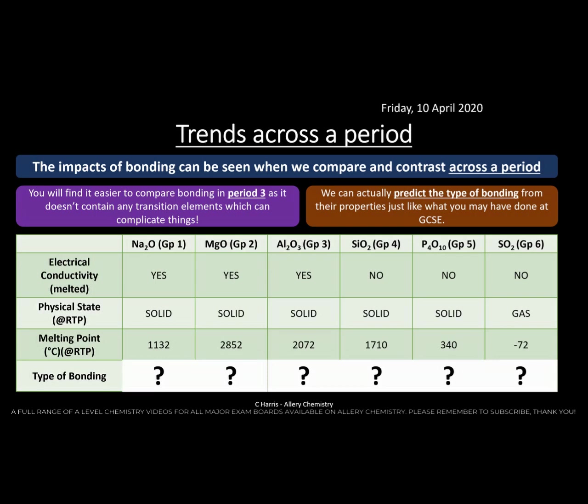Looking at the trends: electrical conductivity — the first three oxides (sodium, magnesium, aluminium) are good electrical conductors when molten, which is typical of ionic substances. Silicon, phosphorus, and sulfur oxides are not good conductors when molten, suggesting they are not ionic. Physical state shows they are solid across period 3 until phosphorus/sulfur oxides, which are gases — suggesting simple covalent structure rather than giant structure. Melting points increase then decrease again across the period.